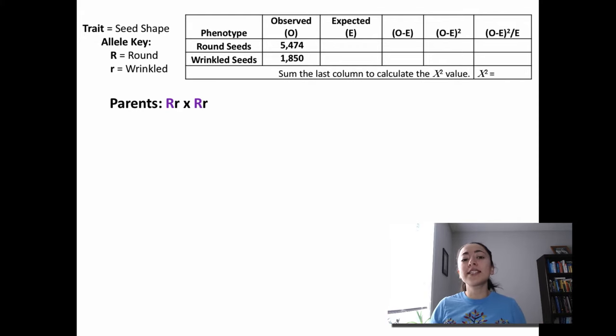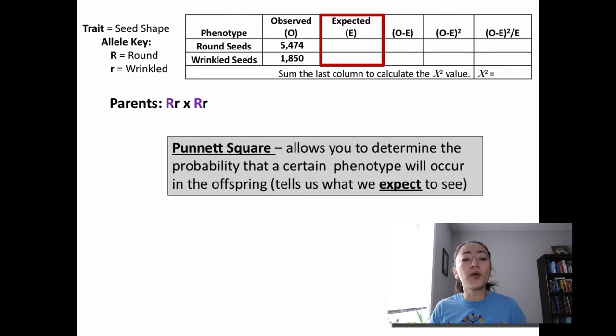The first step in doing a chi-squared test is to determine how many offspring we expected to see with each phenotype. You already know how to do this. You simply use a Punnett square. Remember, Punnett squares allow us to determine the probability that a certain phenotype will occur in the offspring. Therefore, it can tell us the values we expect to see.